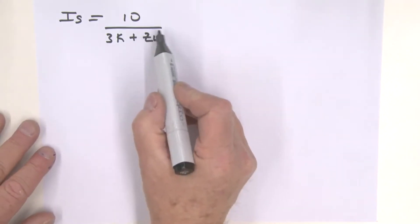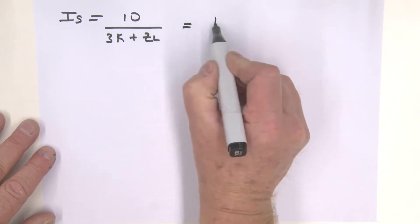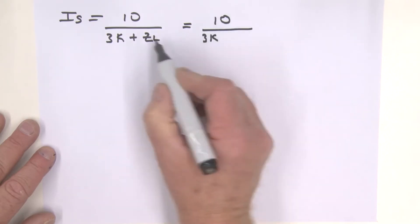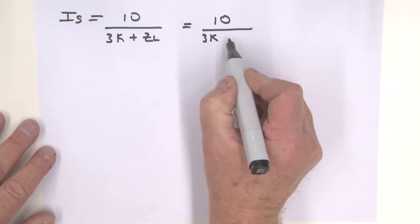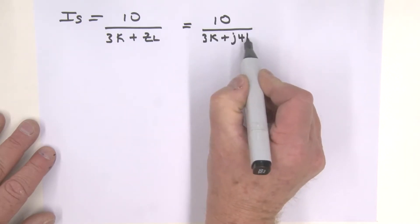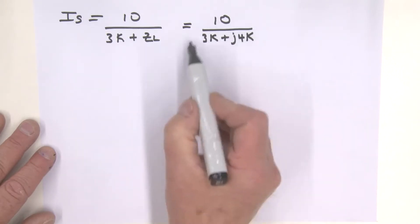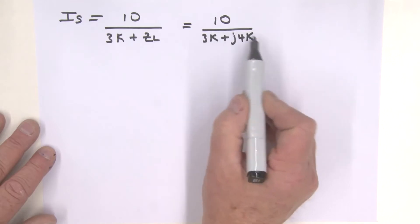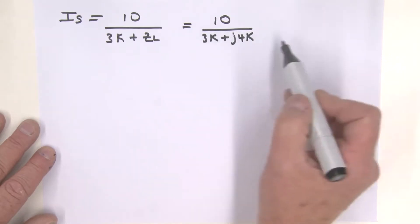What we have to do now is substitute for the ZL. So we'll rewrite that: that's 10 divided by 3K. ZL is what? That's a j4K, so that's plus j4K. Now to go any further, we need to convert that into polar form.